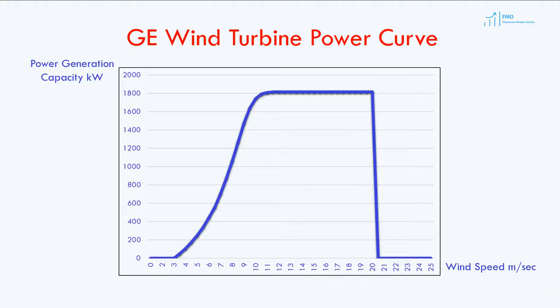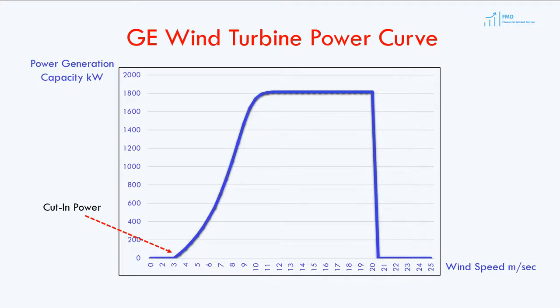First, note that there is no energy output at wind speeds between 0 and 3 meters per second. The wind turbine starts energy production at a wind speed of 3 meters per second — this point is known as cut-in power. At speeds above 3 meters per second, the power output rises until the wind speed reaches 11 meters per second, at which point the power output reaches its maximum level of 1,815 kilowatts. This point is known as rated power.